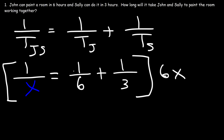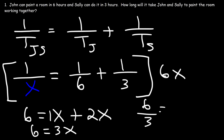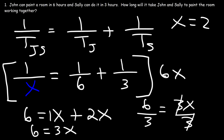Let's distribute 6X to everything. Multiplying 1 over X by 6X, the X cancels and we get 6. Multiplying 1 over 6 by 6X, the 6 cancels giving us X. And 6X times 1 over 3 gives us 2X. So 1X plus 2X equals 3X. Dividing both sides by 3, X equals 6 over 3, which is 2. Working together it will take John and Sally 2 hours to paint the room.